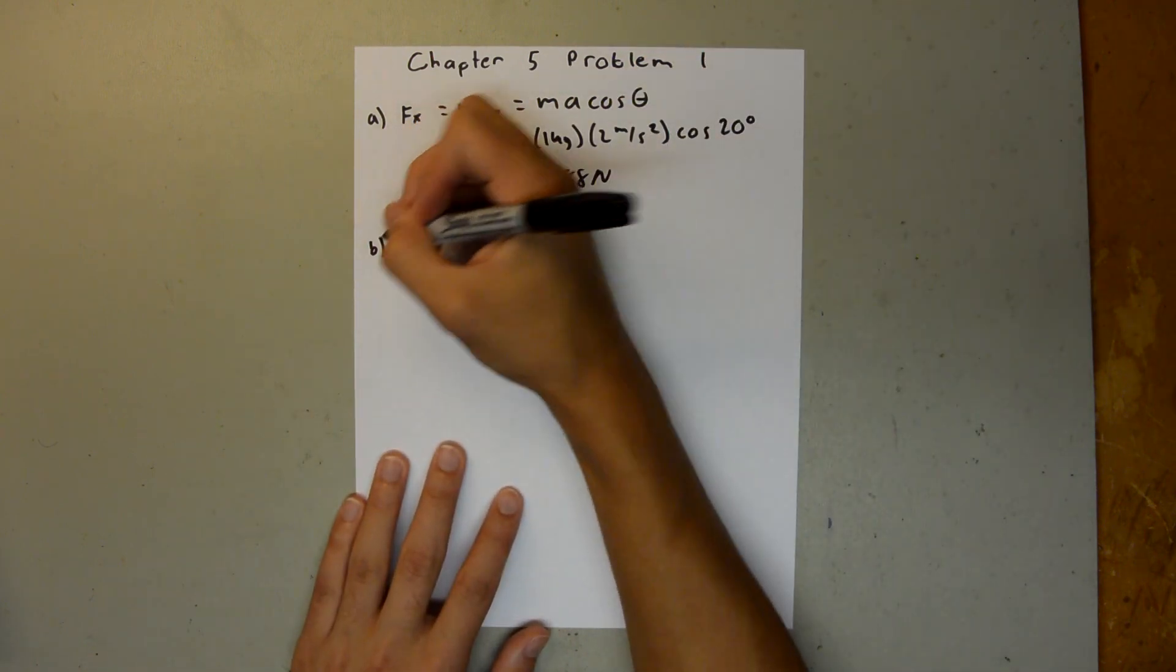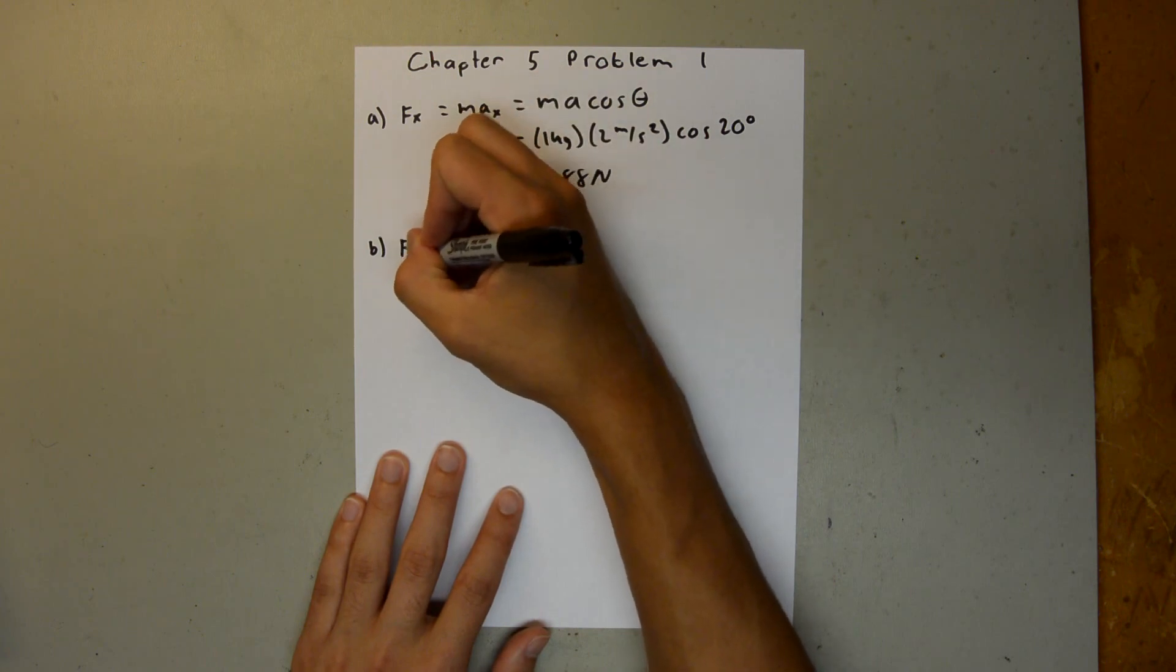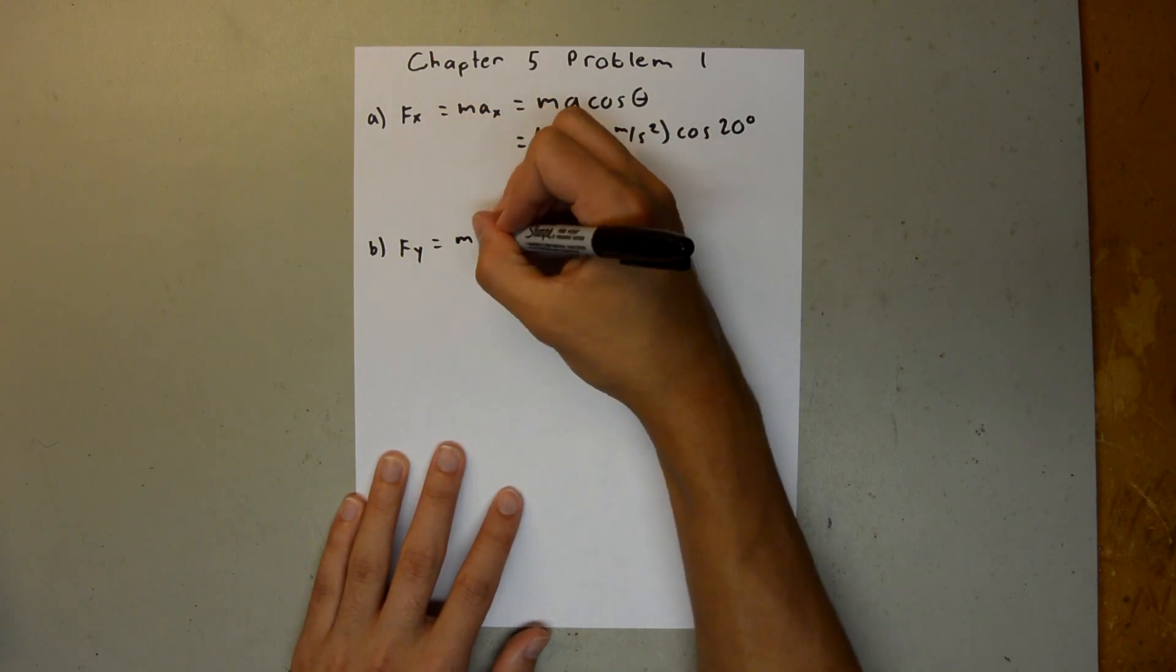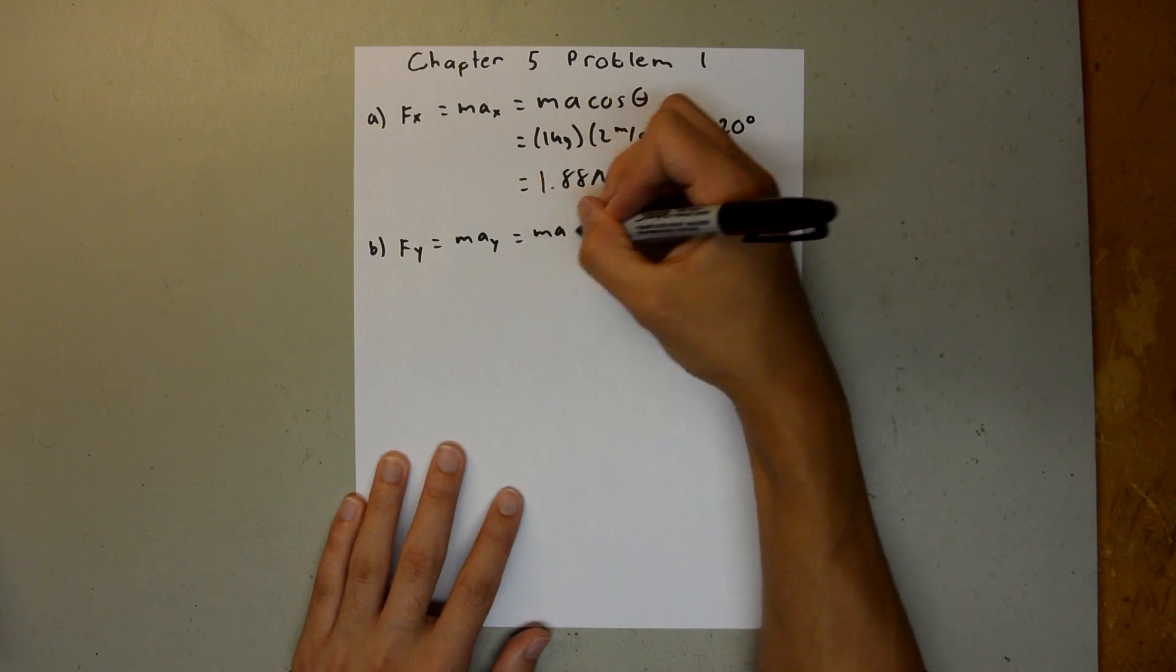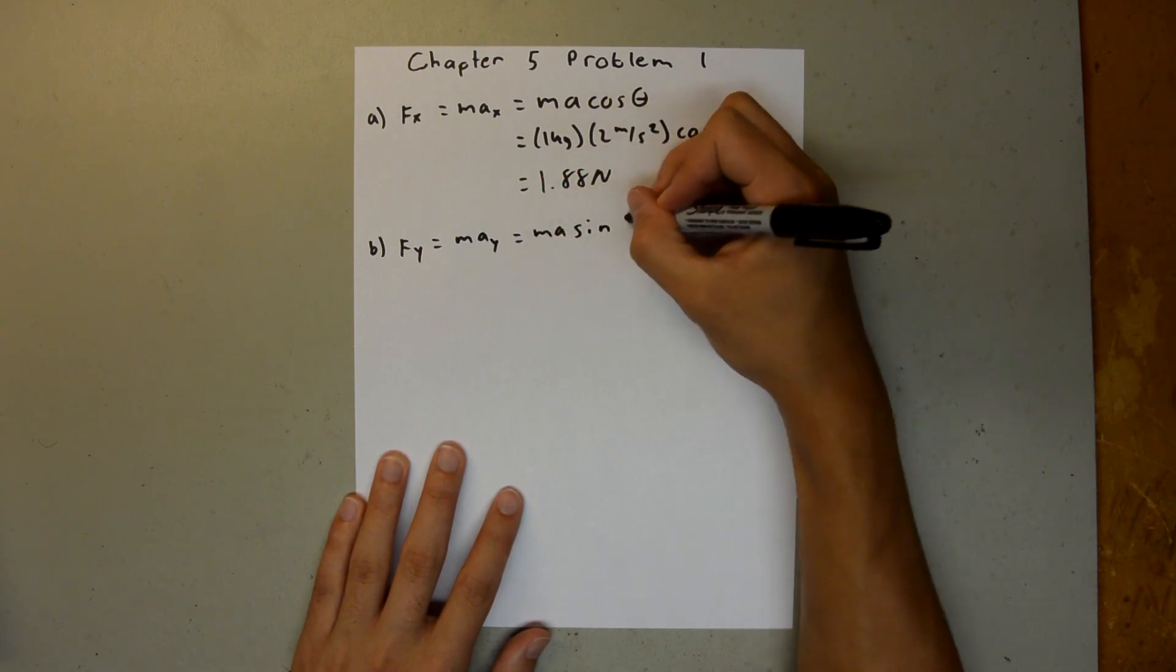And for Part B, we're going to do the same thing, just in the y-direction. The force in the y is equal to m times a_y, which is equal to m times a times sine theta.